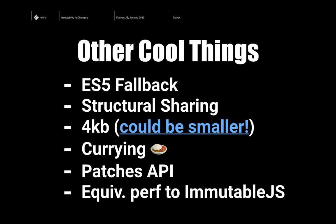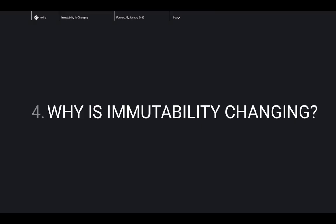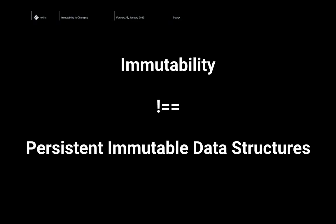Other cool things Immer does: proxies don't transpile back to ES5 so they have a fallback for that. They also implement structural sharing, they're a quarter the size of ImmutableJS, they support currying and patching, and they have equivalent performance to ImmutableJS. Stepping back — why is immutability changing? What have we learned from all of this? The core realization in the immutable community is that immutability is not equal to persistent immutable data structures.